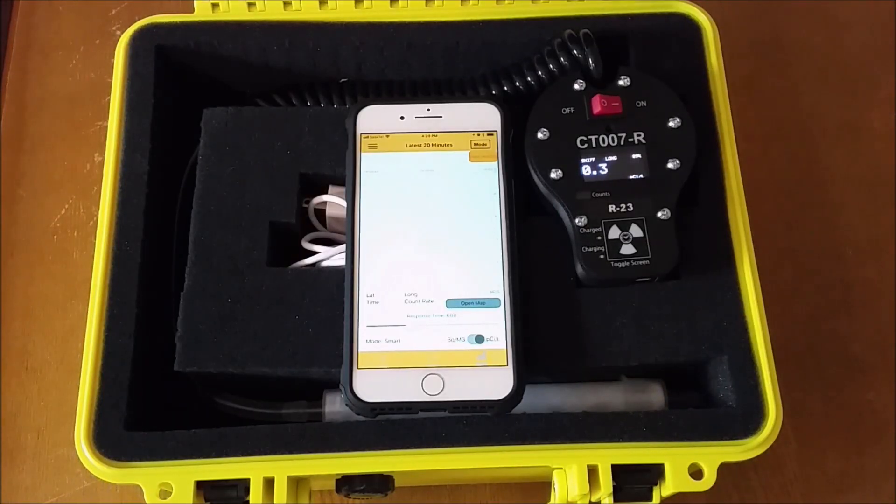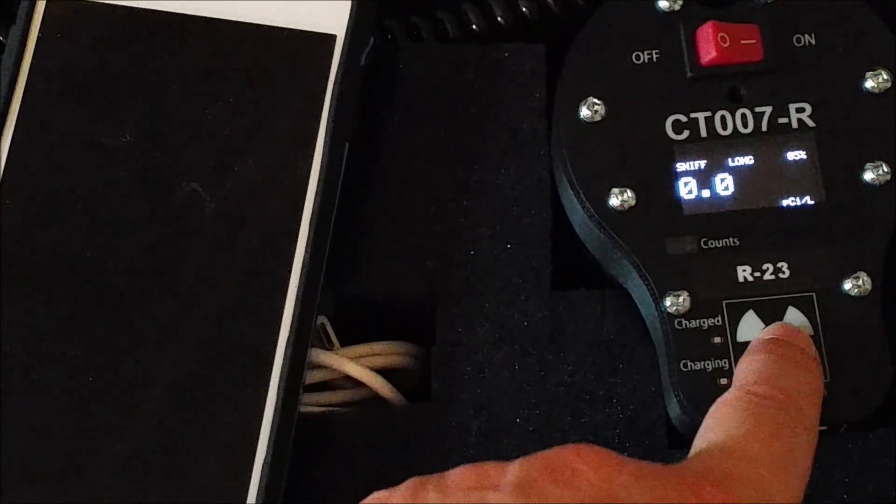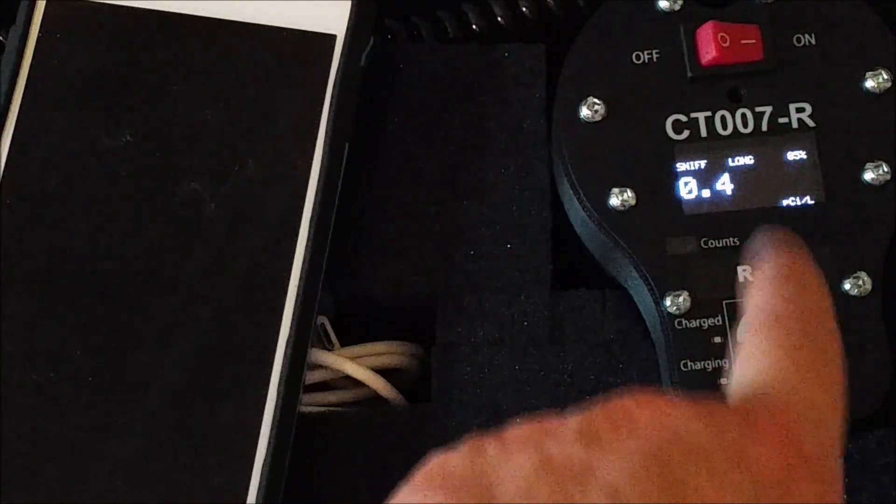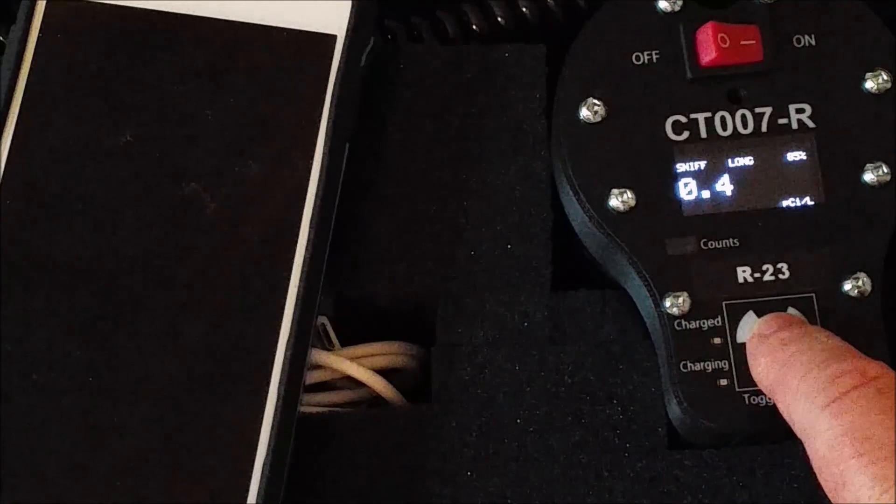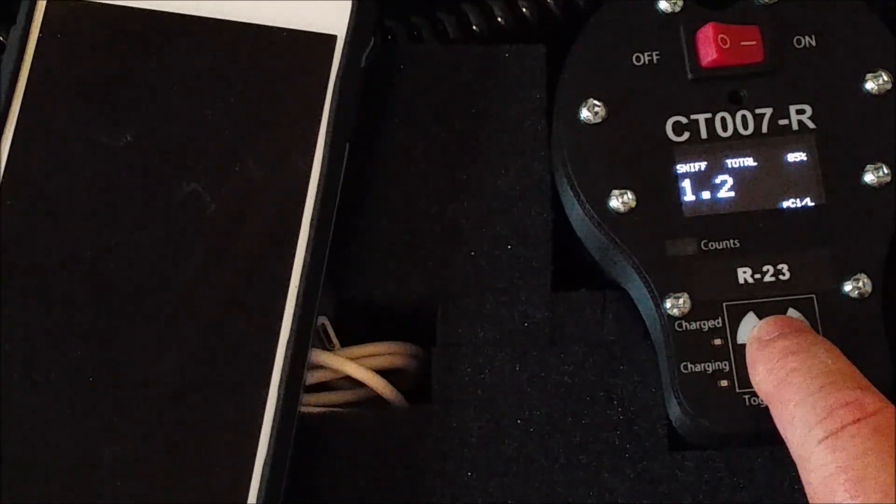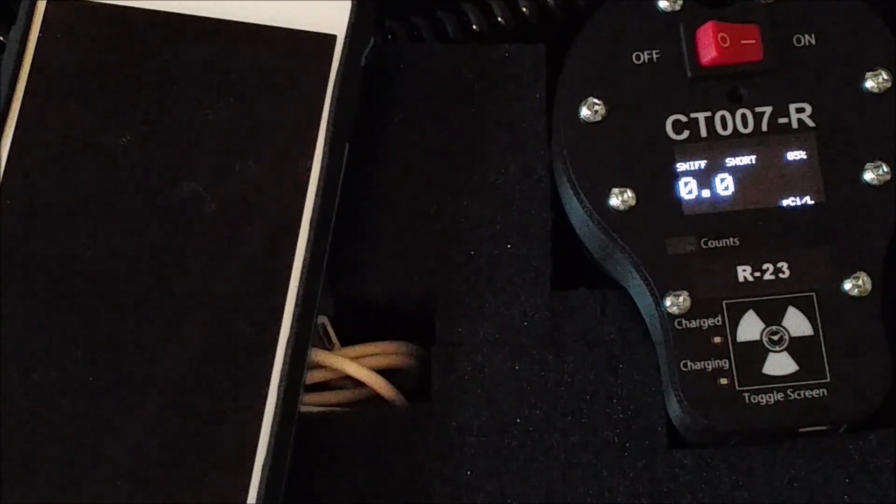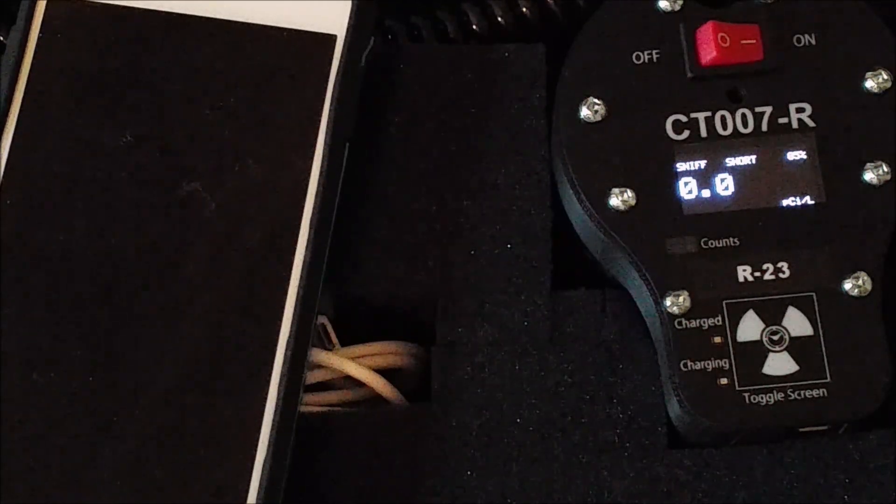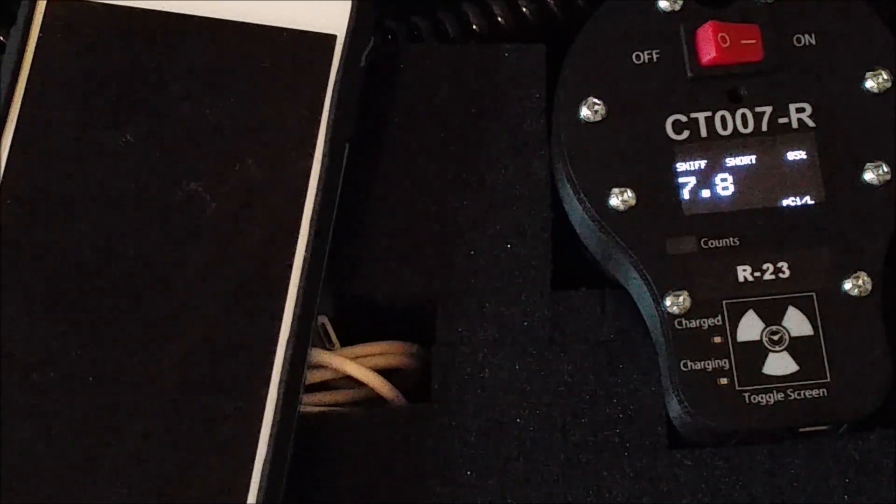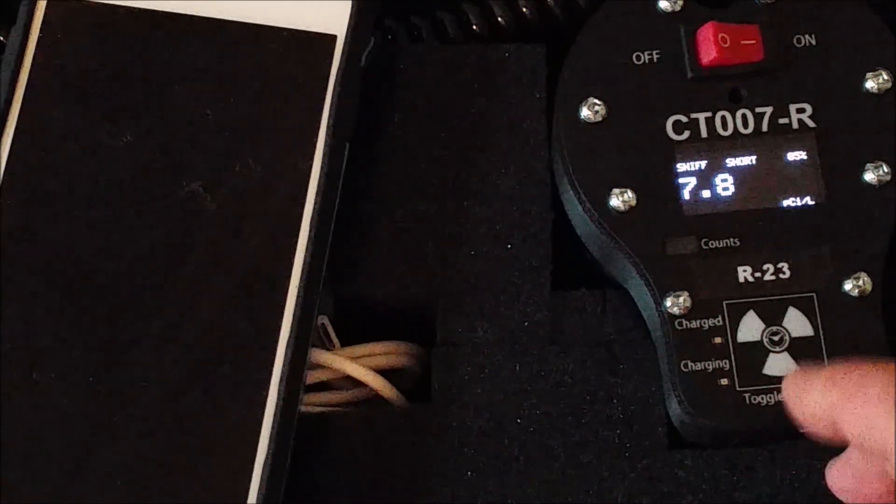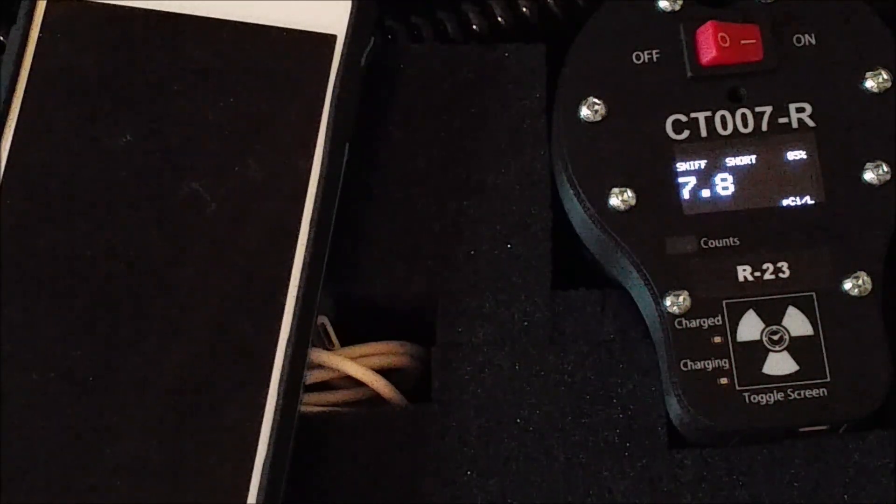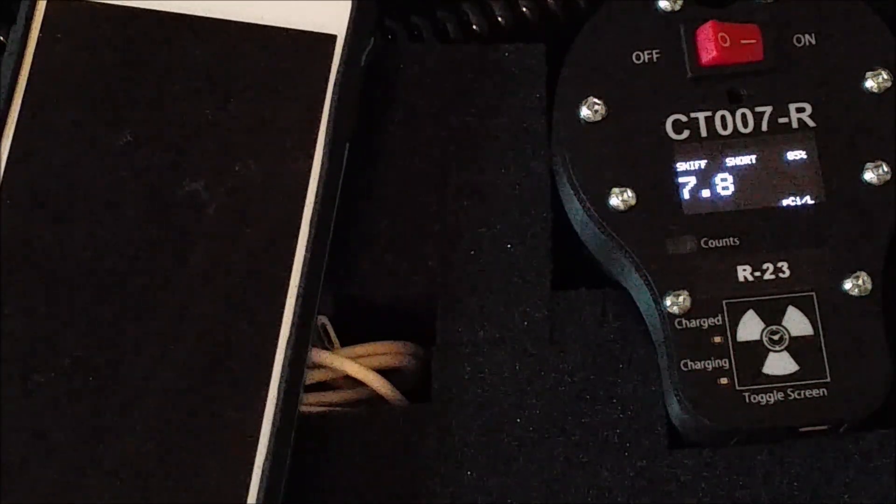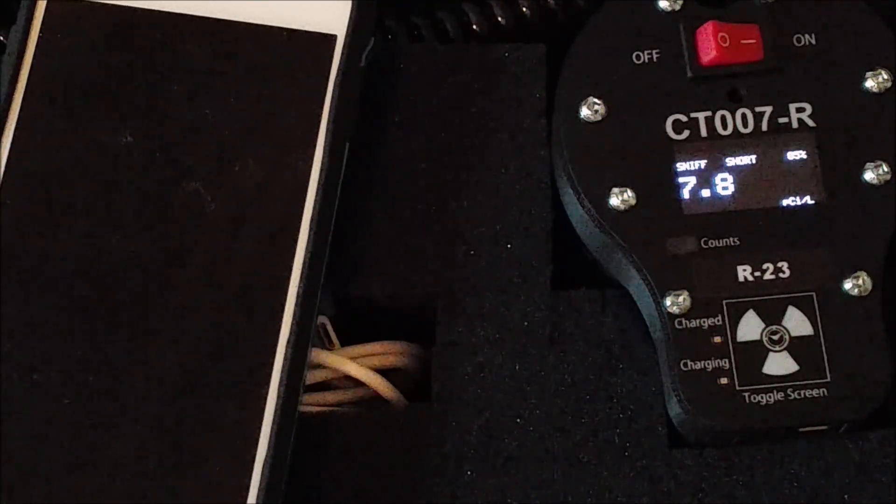We will leave the detector running for a while to allow the readings to stabilize. It has been about 40 minutes. The counts are still reading very low. The long average is reading 0.4 and the total since we have started is at 1.2. The short average will bounce around between 0 and a few picocuries per liter. However, the short average isn't very useful in this situation. It is more directed towards sampling areas you are expecting to have lots of radon, under a slab of concrete or inside of a wall for example.